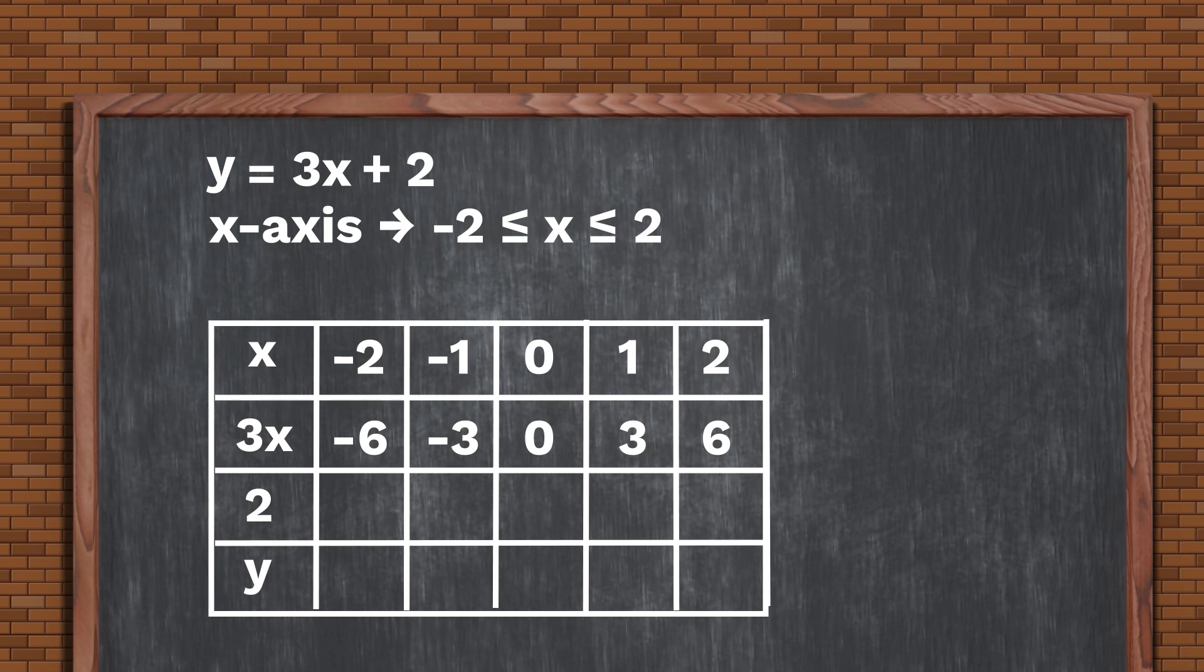To fill the next row, you'll observe that plus 2 is a constant. So it does not change as x changes. The table can then be filled to get plus 2 all through, as you can see on the screen.